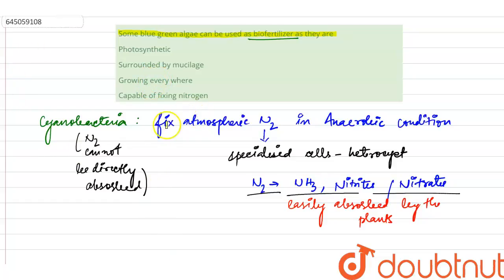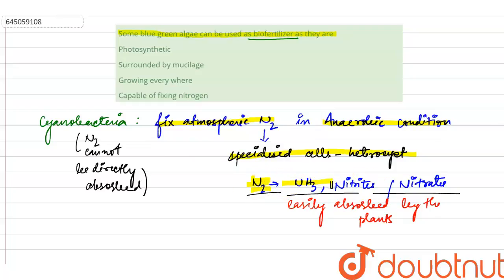To recap: cyanobacteria are able to fix atmospheric nitrogen in anaerobic conditions because they have specialized cells called heterocysts, which not only fix atmospheric nitrogen but also help in conversion into ammonia, nitrites, and nitrates so that these can be easily absorbed by plants.